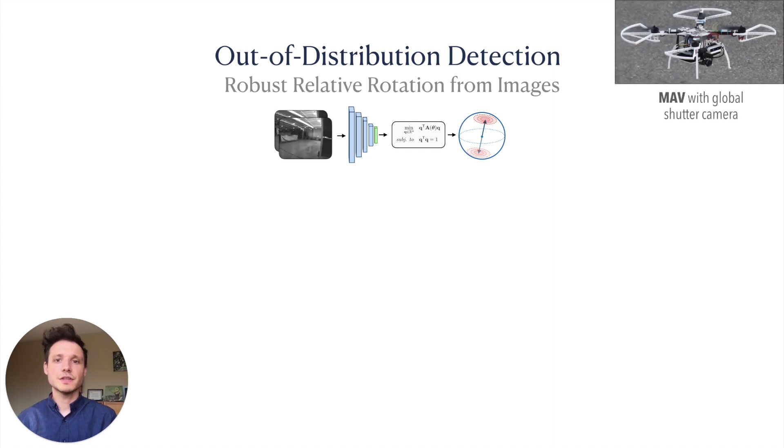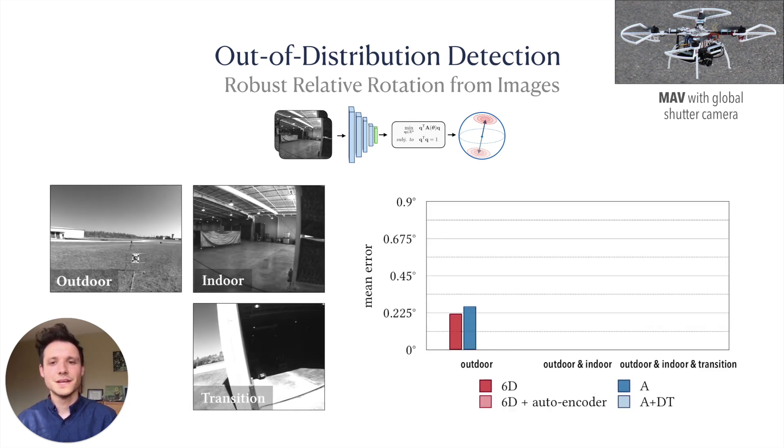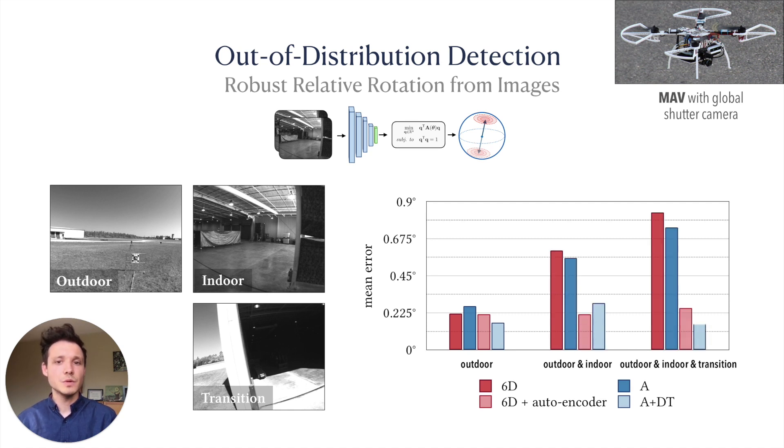In addition to the KITTI dataset, we further evaluated our out-of-distribution detection scheme using data collected with a micro aerial vehicle, flying between indoor and outdoor environments. We trained each model with outdoor data alone and found that our approach was able to compete with a separate autoencoder mechanism when exposed to indoor and transitional images at test time.